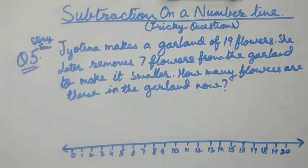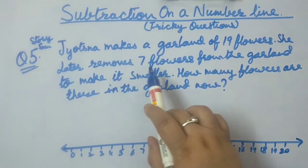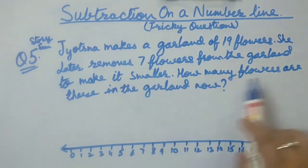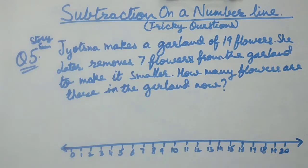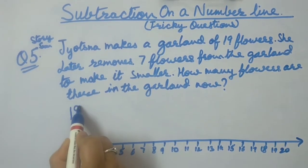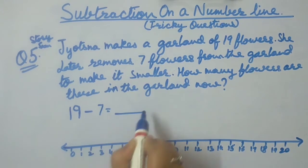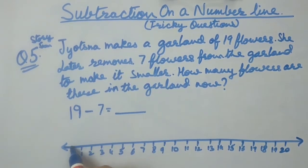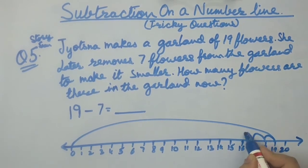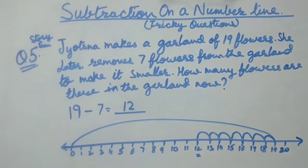Question number 5 is also a story sum. Josna makes a garland of 19 flowers. She later removes 7 flowers from the garland to make it smaller. How many flowers are there in the garland now? We will take out the question. She started making the garland. Garland means mala in Hindi. She started with 19, then she removed 7. Our question came out to be 19 minus 7. First step 0 to 19. Moving backwards 7 steps: 1, 2, 3, 4, 5, 6 and 7. We reached at number 12. That means the garland has 12 flowers.